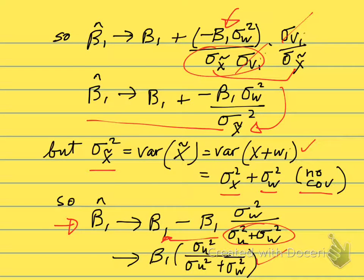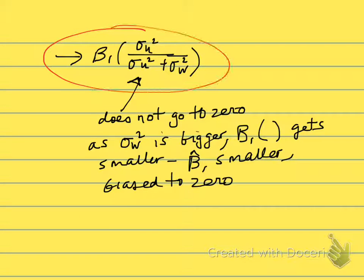When we take a look at this, we have this expression, and what we notice is that as the sample size gets larger, there's no reason for this expression to go to zero. In particular, if σ²w is big, as it gets bigger, this whole term goes down. It gets smaller and smaller. So β̂₁ will approach zero as σ²w gets bigger.